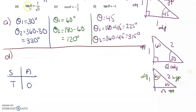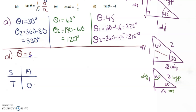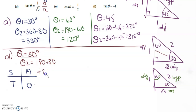D — tan θ equals 1 over root 3. So this is opposite over adjacent. 1 is opposite 30 degrees, so θ equals 30 degrees, which is θ₁ because tan is positive here. θ₂ is the other time tan is positive — in the T quadrant — so 180 plus 30, which is 210 degrees.